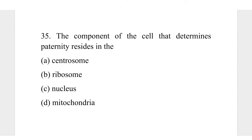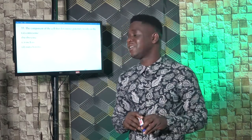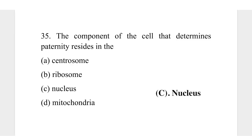Question 35. The component of the cell that determines paternity resides in the: A, centrosome; B, ribosome; C, nucleus; D, mitochondria. The components that determine hereditary characteristics of a cell are contained in the nucleus. The nucleus is the part of the cell that contains all its hereditary material. The correct answer is C, nucleus.